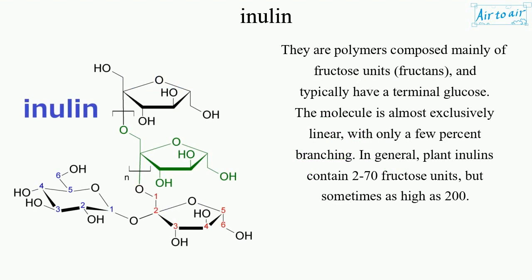They are polymers composed mainly of fructose units, fructans, and typically have a terminal glucose. The molecule is almost exclusively linear, with only a few percent branching. In general, plant inulins contain 2 to 70 fructose units, but sometimes as high as 200.